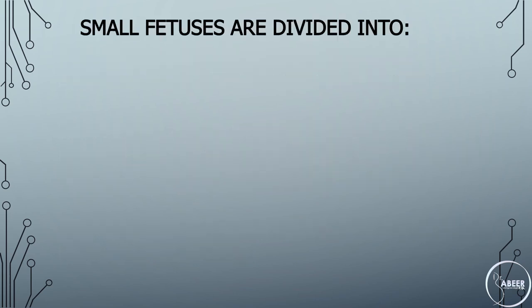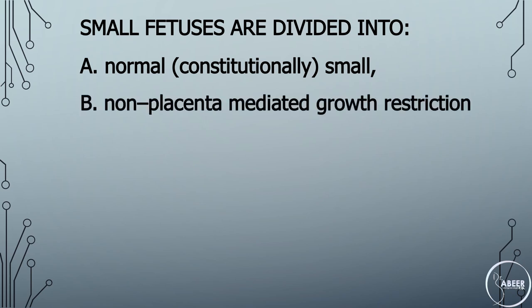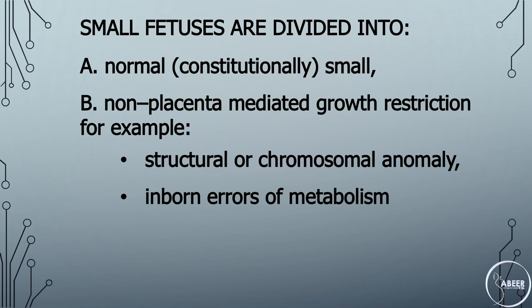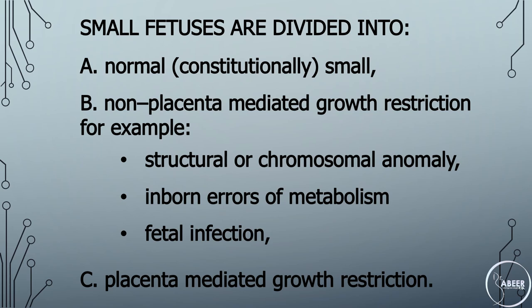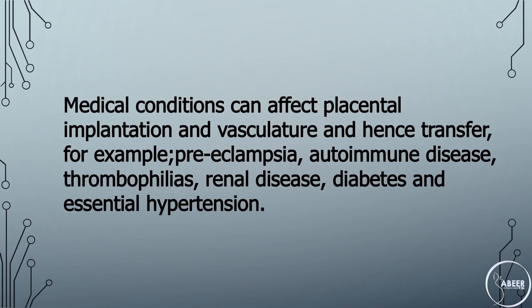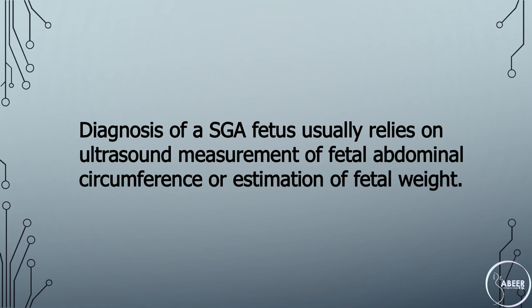Background: Small fetuses are divided into normal or constitutionally small; non-placenta-mediated growth restriction, for example structural or chromosomal anomaly, inborn errors of metabolism, and fetal infection; and placenta-mediated growth restriction. Maternal factors can affect placental transfer of nutrients, for example low pre-pregnancy weight, undernutrition, substance abuse, or severe anemia. Medical conditions can affect placental implantation and vasculature, for example pre-eclampsia, autoimmune disease, thrombophilias, renal disease, diabetes, and essential hypertension. Diagnosis usually relies on ultrasound measurement of fetal abdominal circumference or estimation of fetal weight.